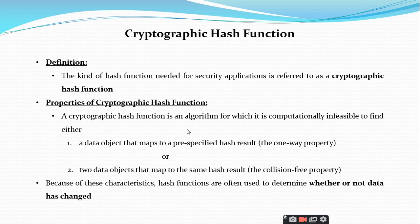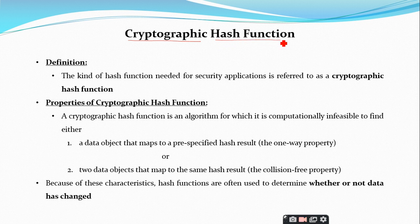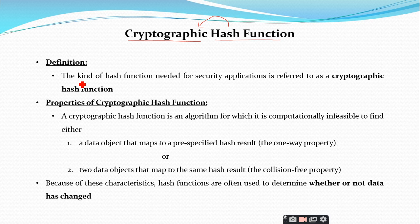Now, let us see what cryptographic hash functions are. We have seen what a hash function is — a very simple technique. When hash functions are applied for the purpose of security, or for achieving security services, then we call such hash functions cryptographic hash functions. The definition is: a kind of hash function needed for security applications is referred to as a cryptographic hash function.